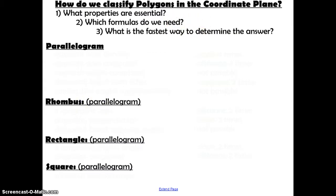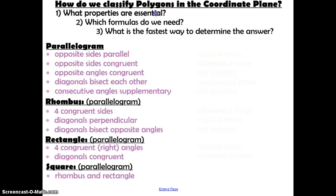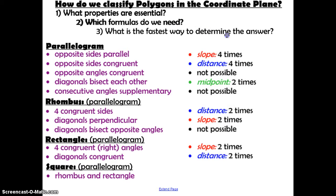Now the question is how do we classify polygons in the coordinate plane? The very first question: what properties are essential? We need to know all of the properties of the parallelogram, rhombus, rectangle, and square as we talked about in Day 2 and Day 3. The next step is which formulas do we need to prove each property? Here I've listed each of the formulas we'll need and how many times you actually have to use each one.